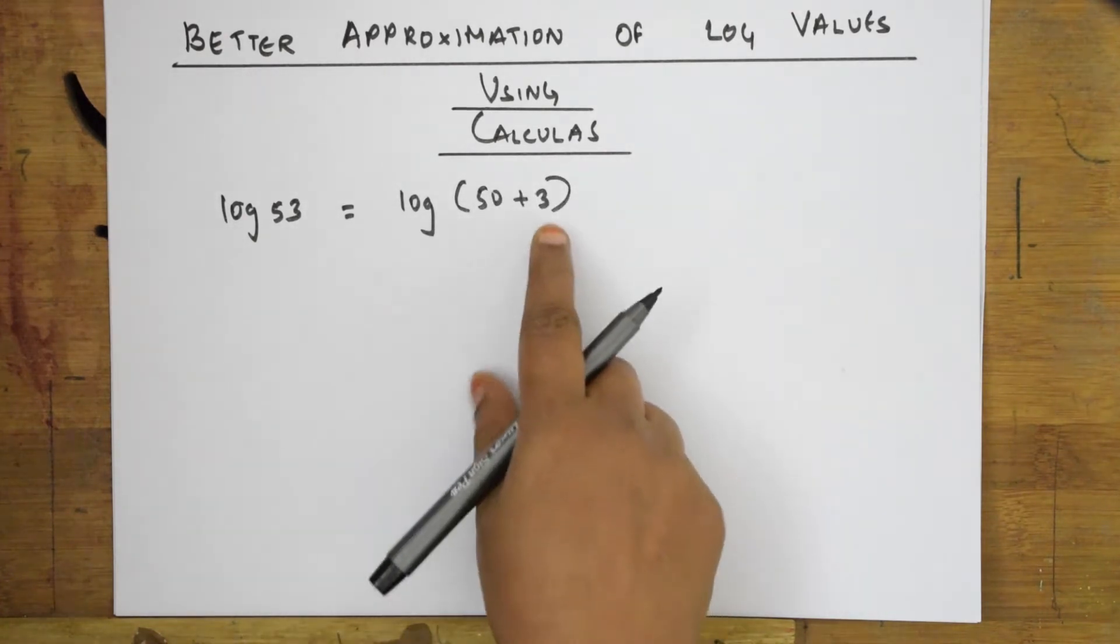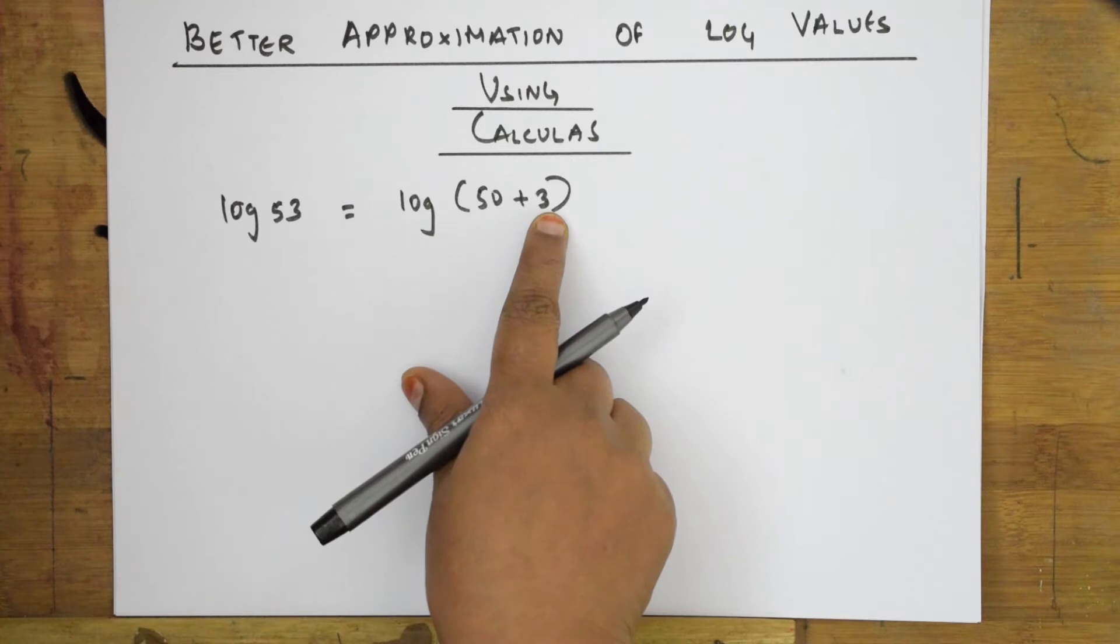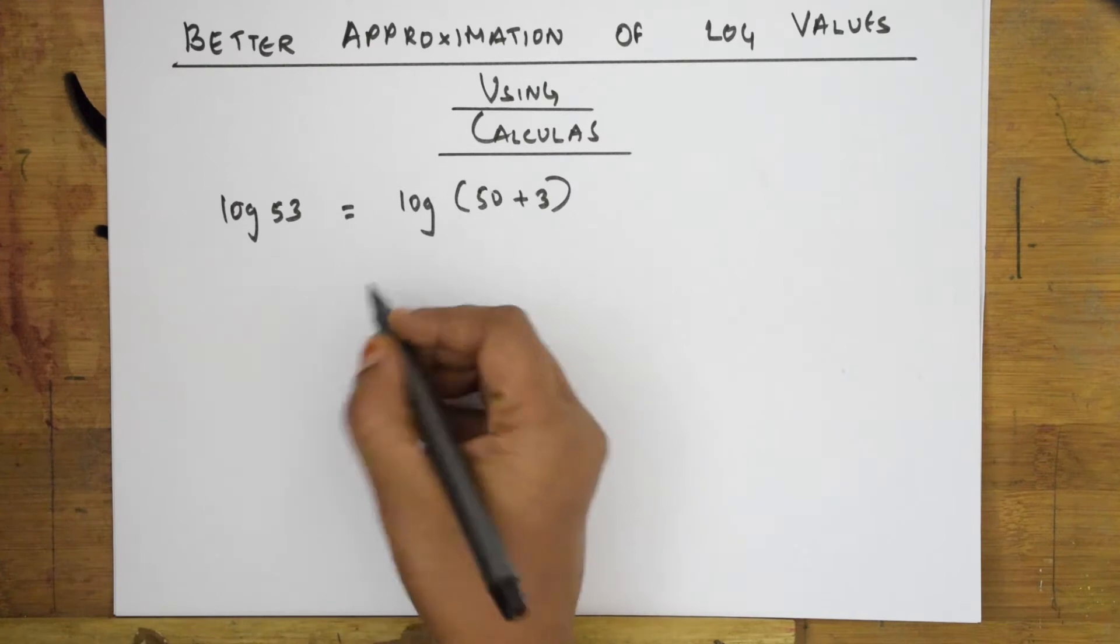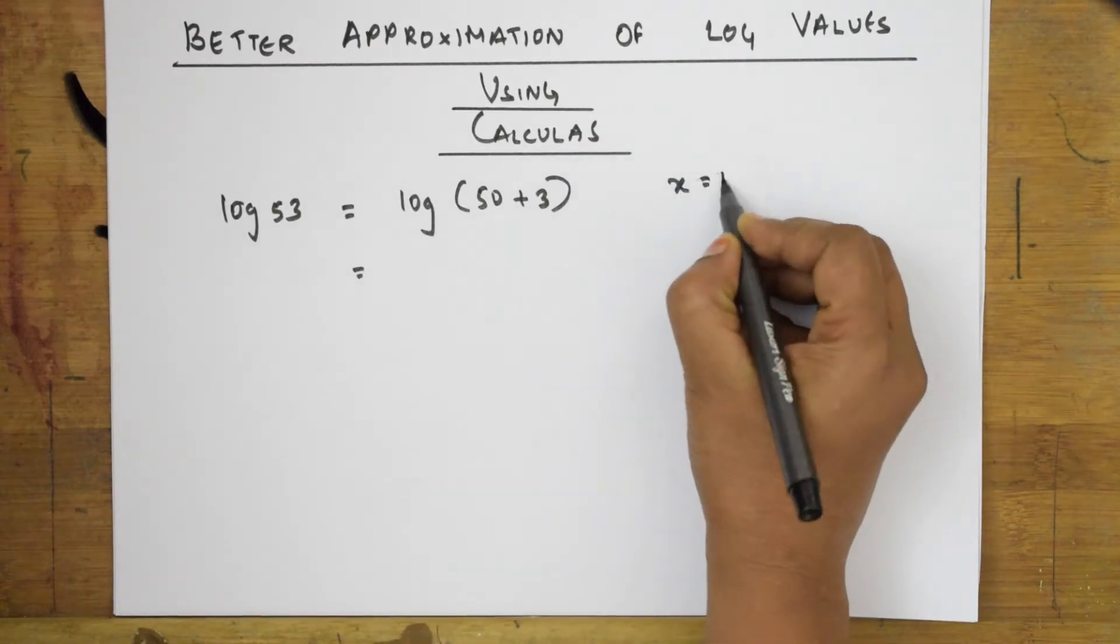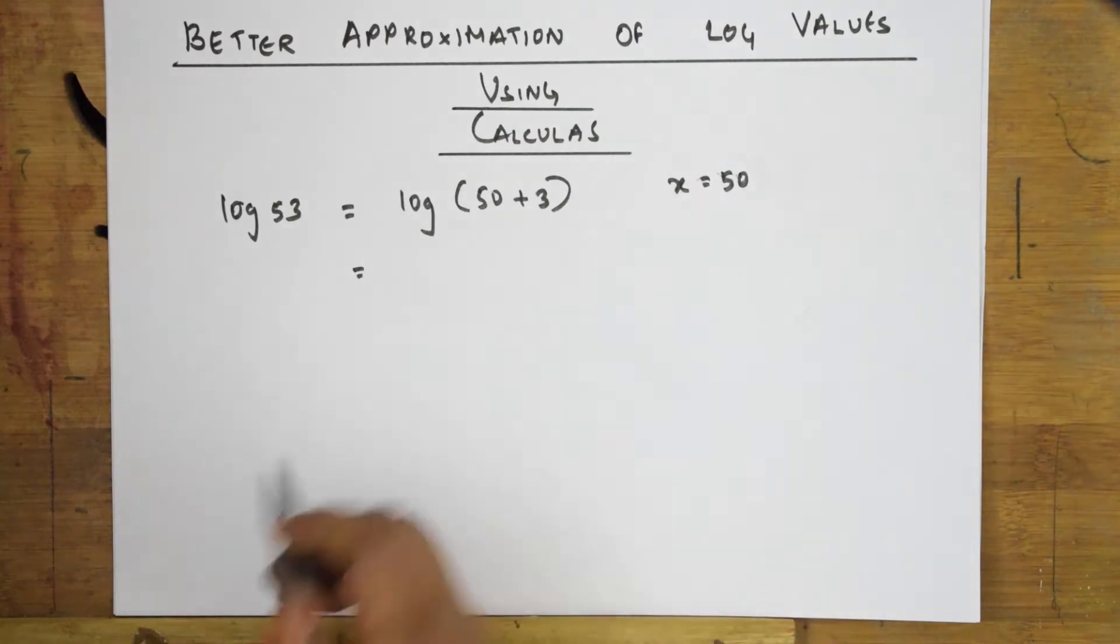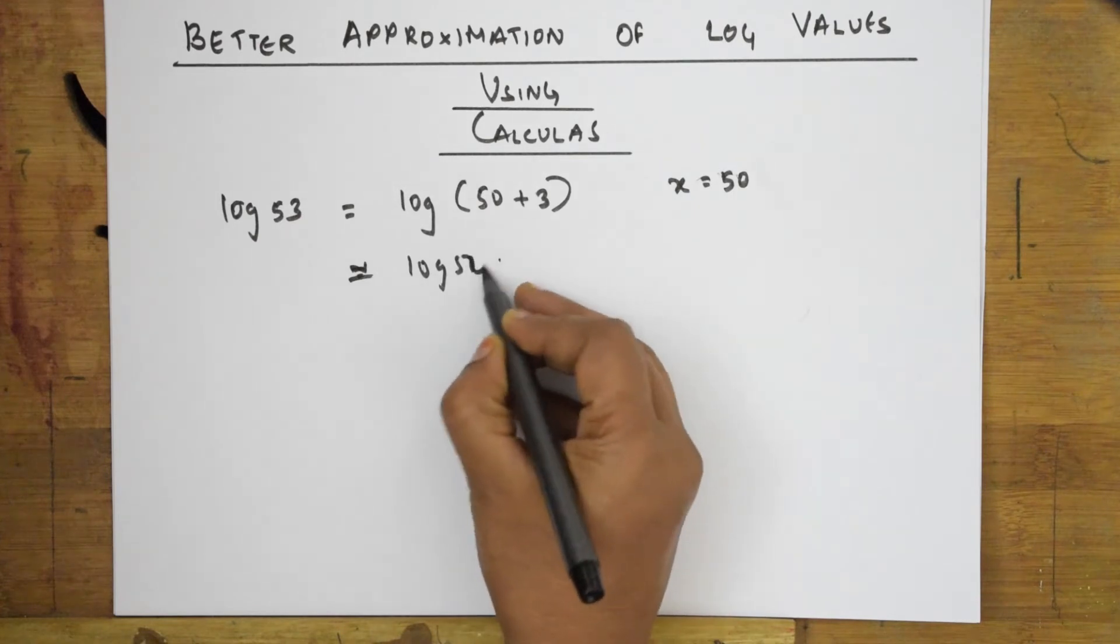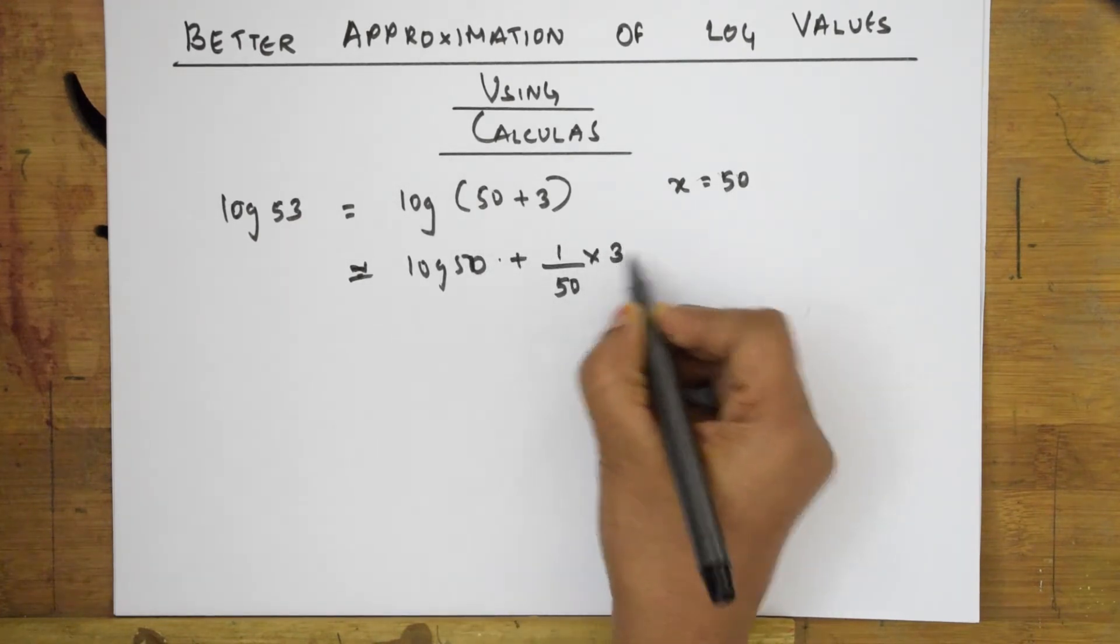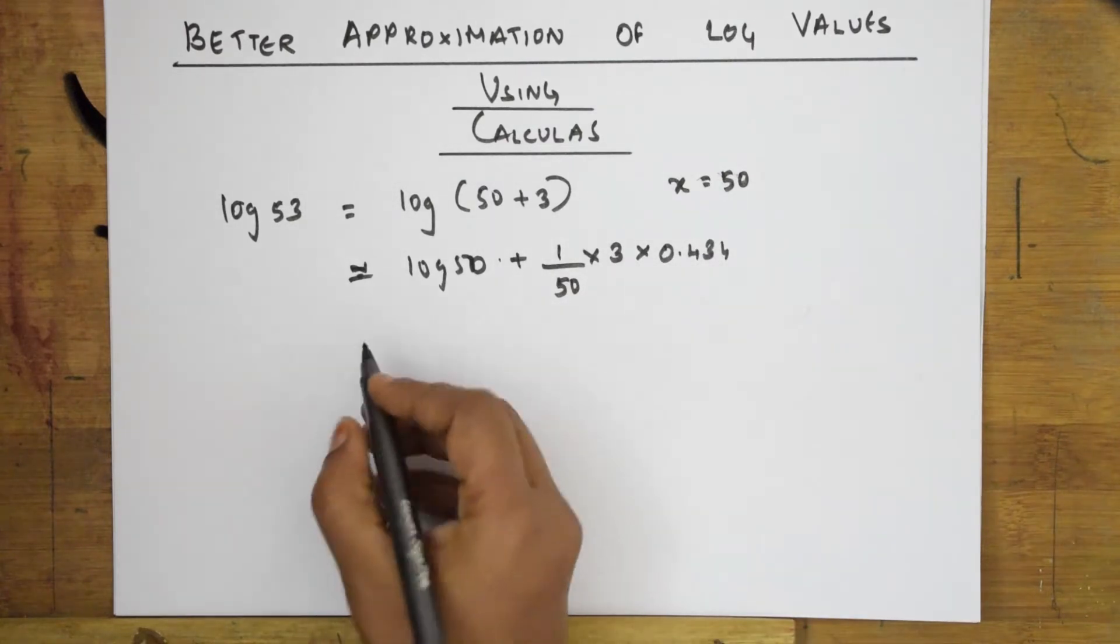Why did I take this particular thing? Here 50, it is easy to find but this 3 value which I have taken, first I will solve the numerical, then we will apply the calculus formula. If I have to write log 50 here, basically you will take x is equal to 50. This can be approximately written as log 50 plus (1/50) × 3 × 0.434.